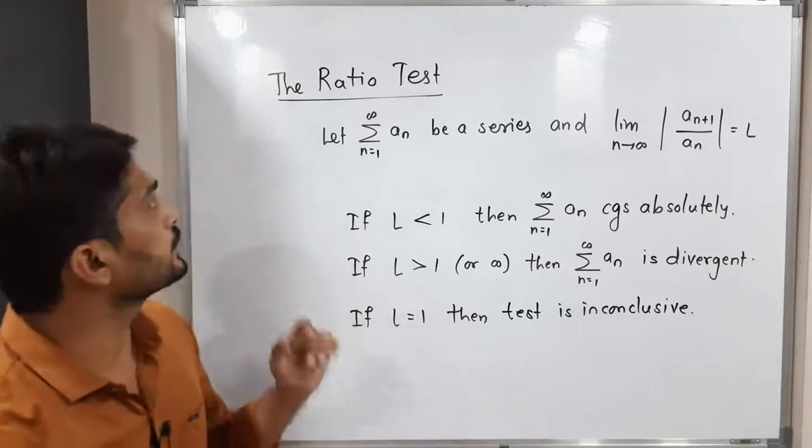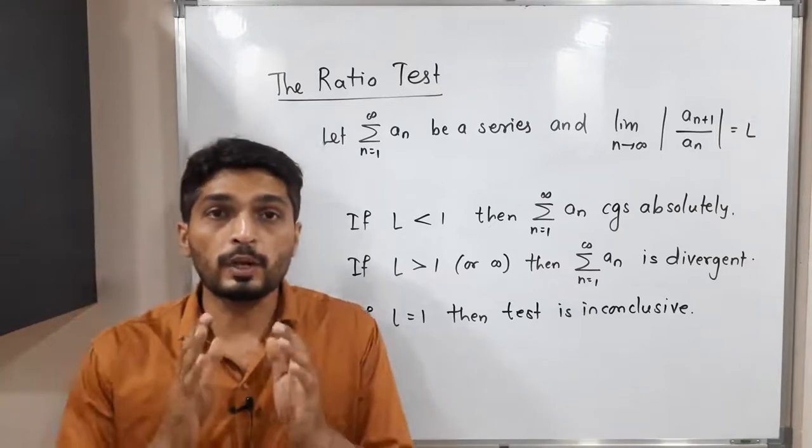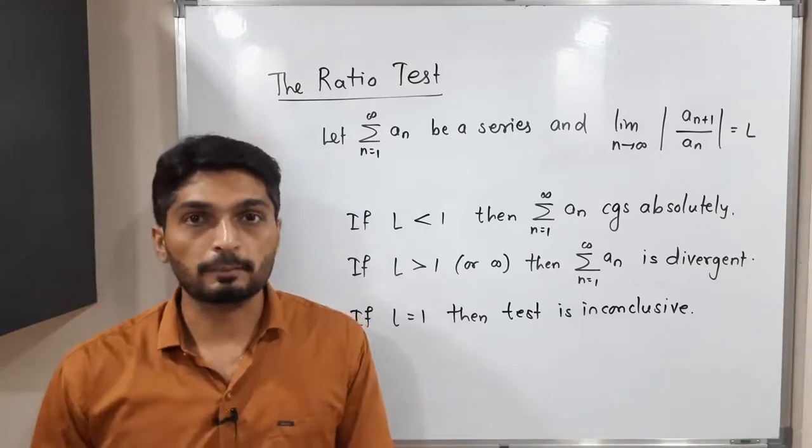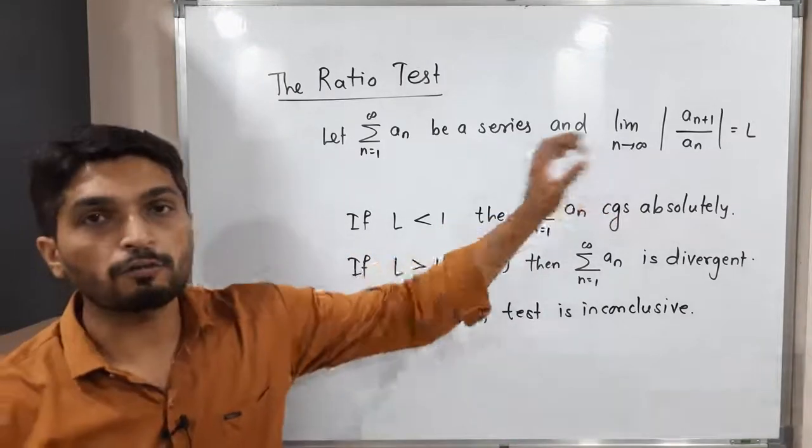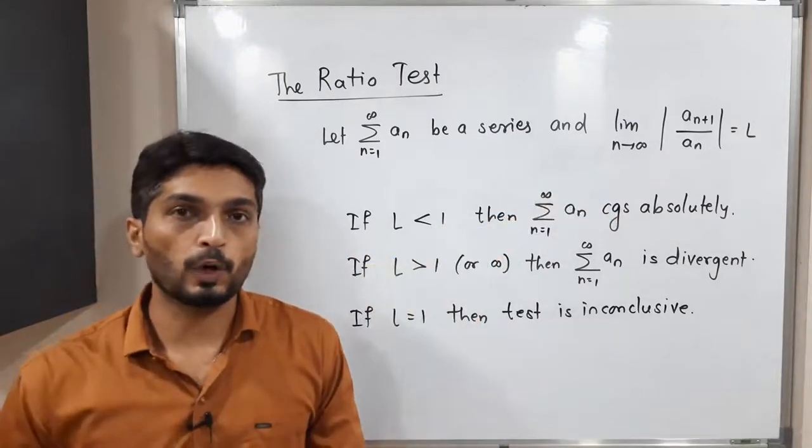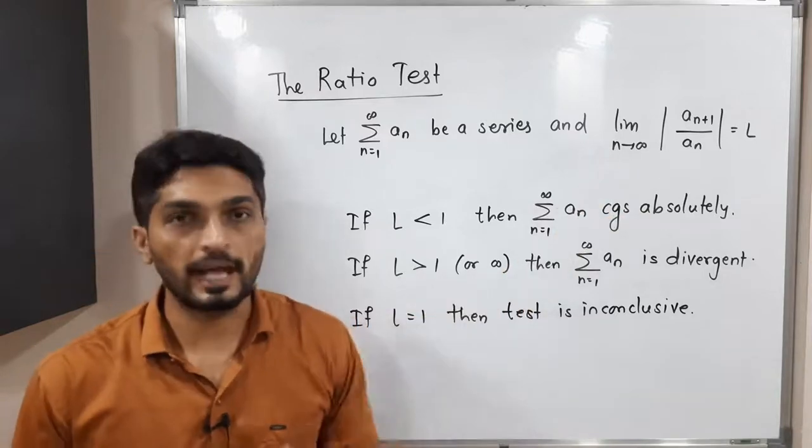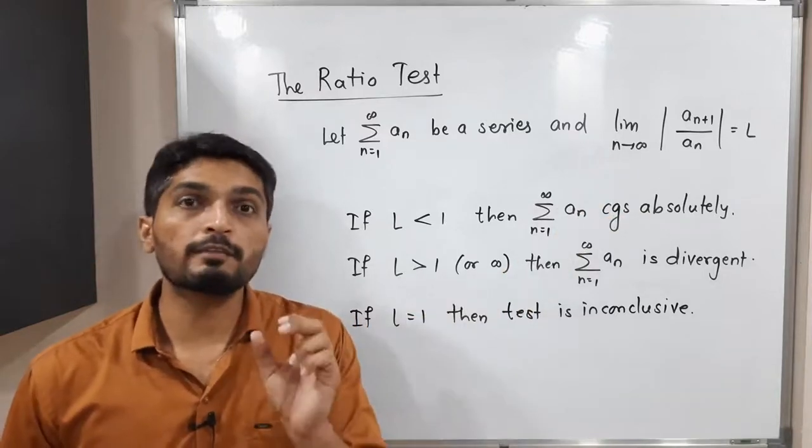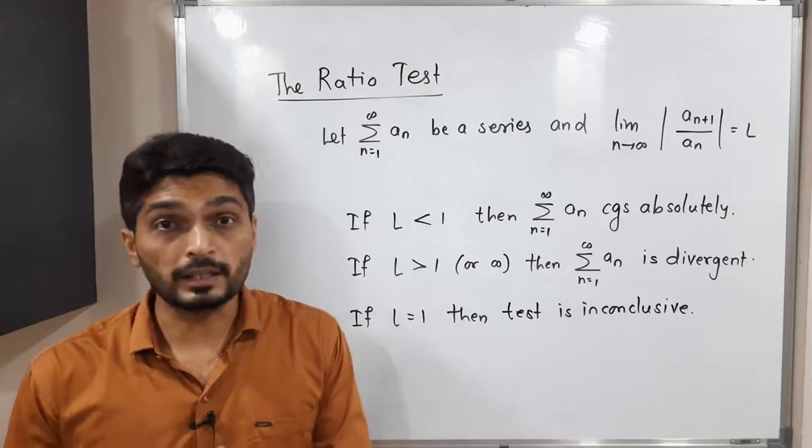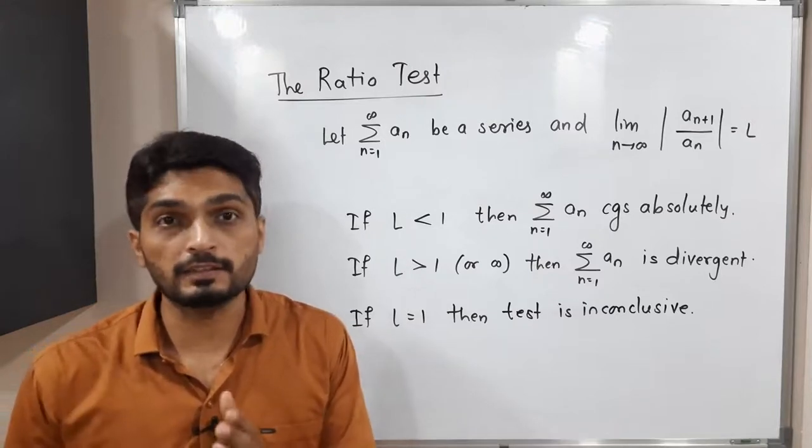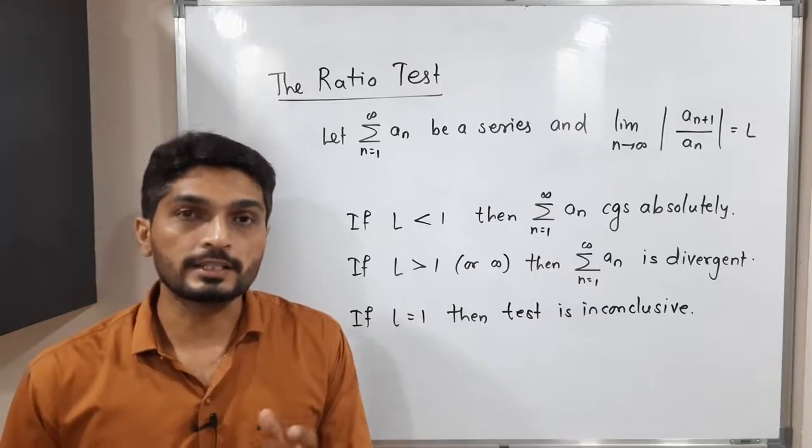Let us discuss first ratio test. So when you have any series summation an, and if you find the limit of mod an+1 upon an and we got its value is L. So by observing the value of L, we decide whether the given series is convergent or divergent.